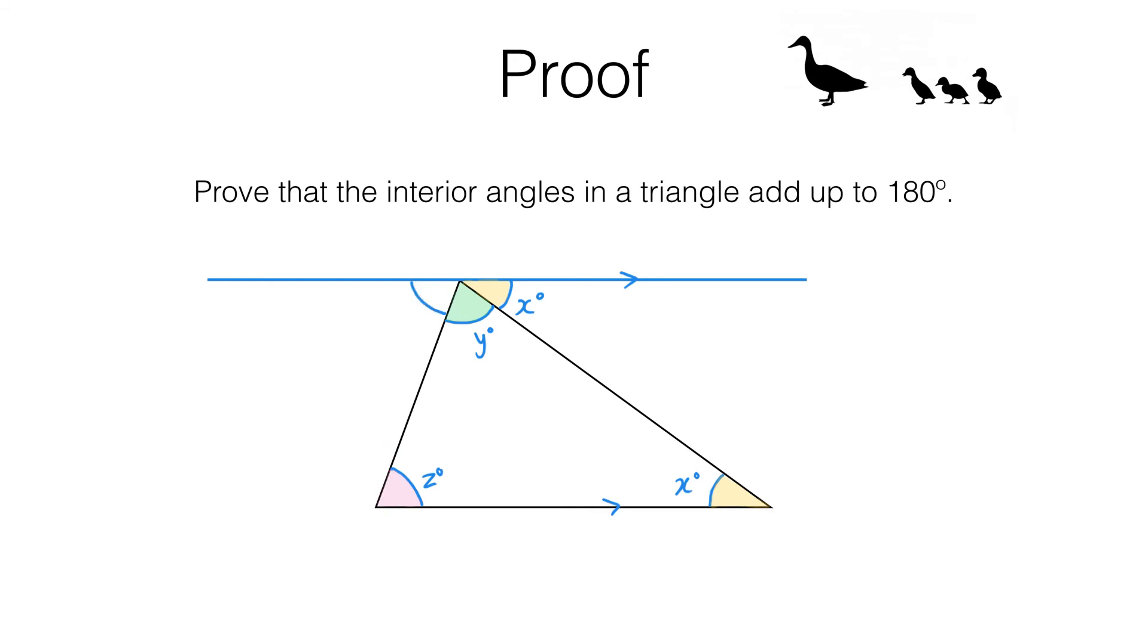Which means this angle here is alternate to this angle here and is therefore equal. Here we have three angles that meet at a point on a straight line. Therefore, they must add up to 180 degrees. x plus y plus z must equal 180.